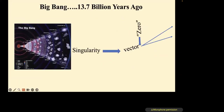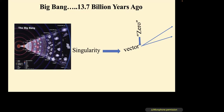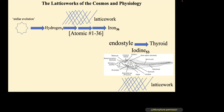Looking at the Big Bang some 13.7 billion years ago — a singularity, or Jung's Unus Mundus — that generated a vector with an origin that has proceeded over the course of time, and we in turn have evolved to adapt to that cosmic expansion. Another way to think about that is as a lattice work.